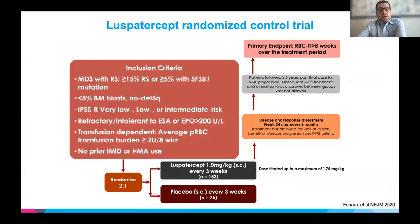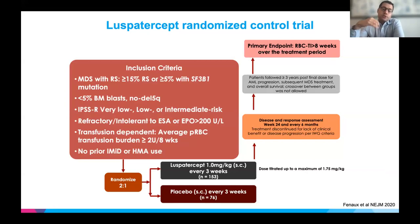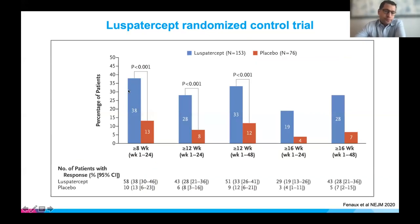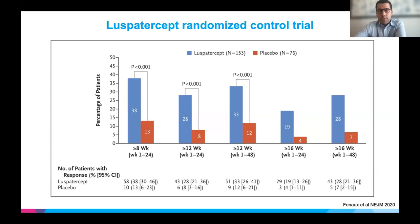This led to development of the MEDALIST randomized controlled trial, which included patients with ring sideroblasts or ring sideroblasts with an SF3B1 mutation, lower or intermediate risk, who had already been treated with an erythropoietin stimulating agent or were ineligible, and were transfusion dependent. Patients were randomized two-to-one to luspatercept — given as an injection every three weeks, up-titrated to 1.75 mg/kg — or placebo. The results showed significantly more patients achieved transfusion independence at eight, twelve, and sixteen weeks with luspatercept versus placebo. Luspatercept is very effective in this population with ring sideroblasts or SF3B1 mutation.